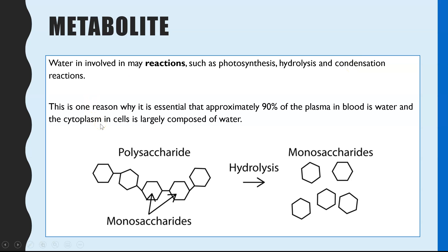This is one reason why approximately 90% of your plasma in blood is water, and most of your blood is plasma. The diagram demonstrates a hydrolysis reaction in carbohydrates — in digestion, or the hydrolysis of glycogen in liver or muscle cells. With a polysaccharide, the addition of water splits the bonds to separate the molecules back into their monomers.